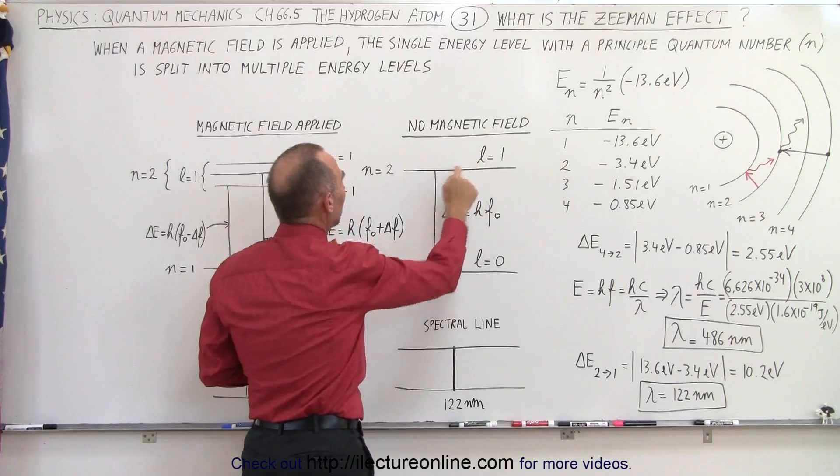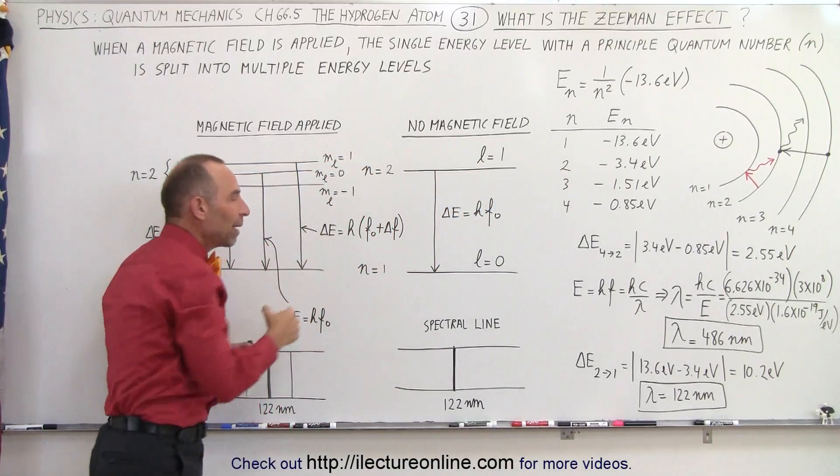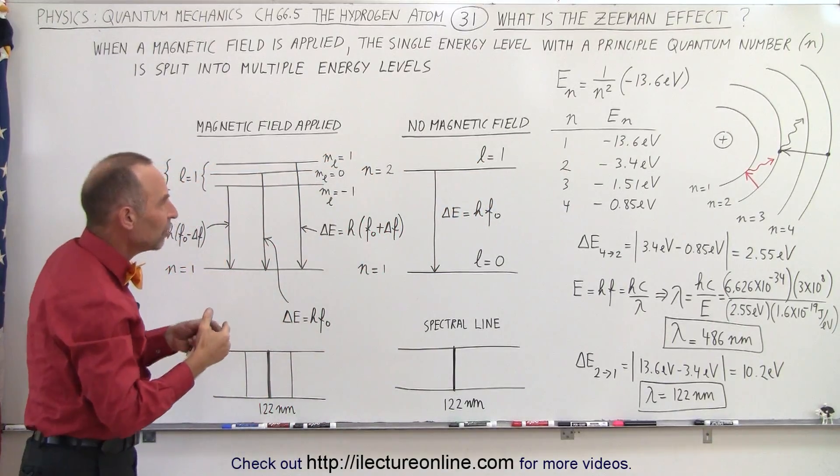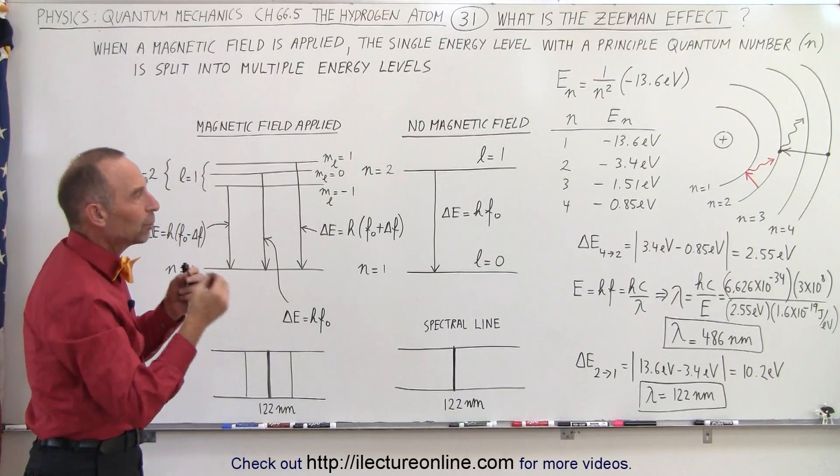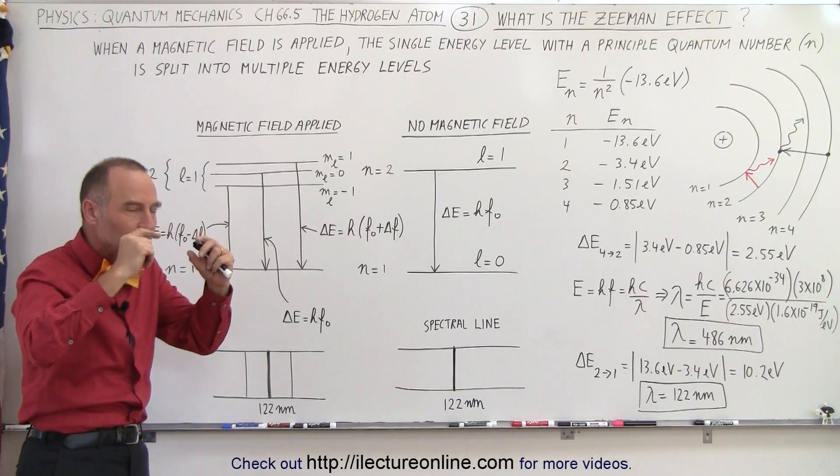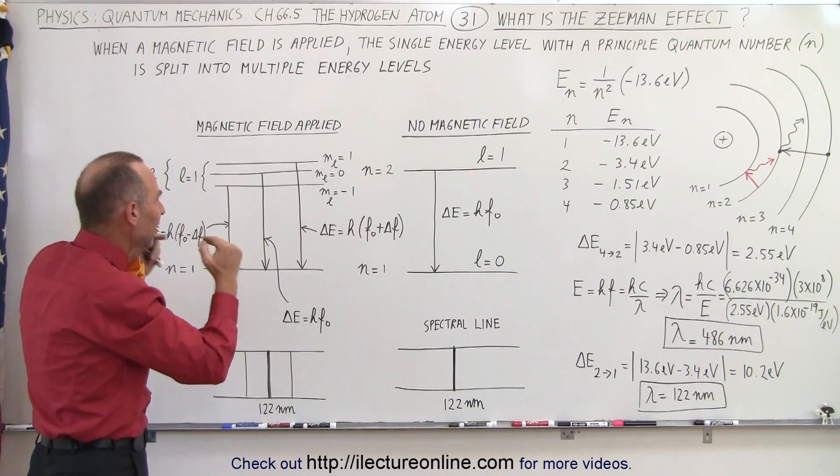When L equals 1, there will be three M sub L possible values, which means there are three different orientations of the angular momentum. The energies of those three different orientations are slightly different.